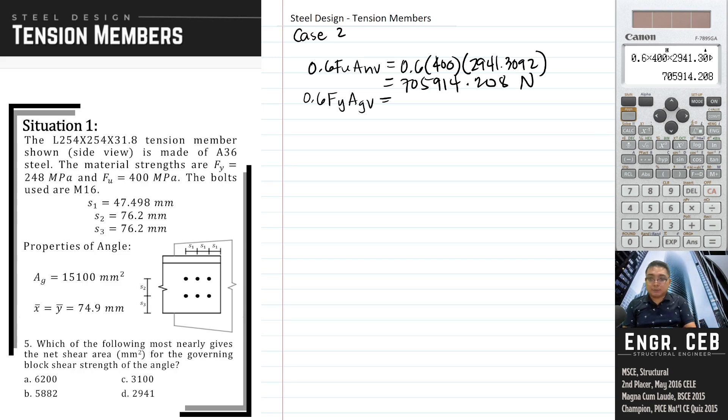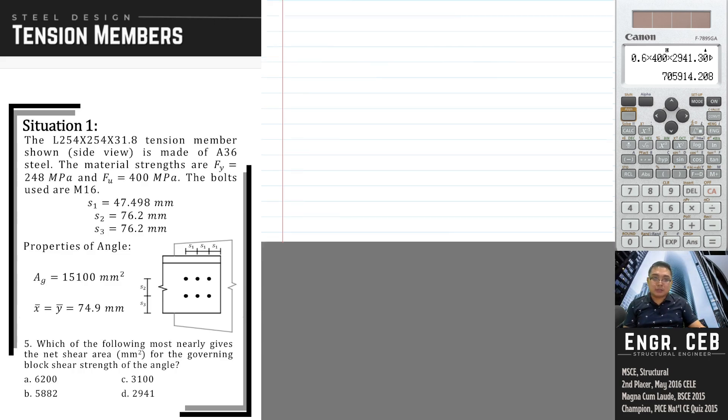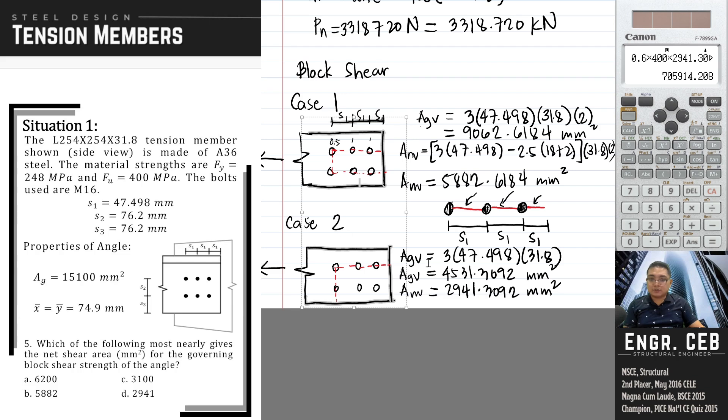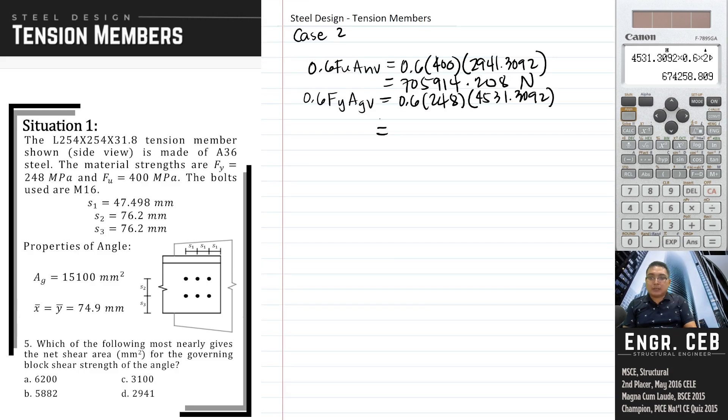And then for 0.6 FY AGV, let us look at AGV of case 2. AGV of case 2 is 4531.3092. So the value of 0.6 FY AGV, that is 674258.809 N.